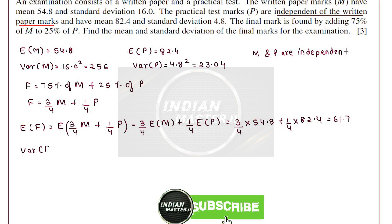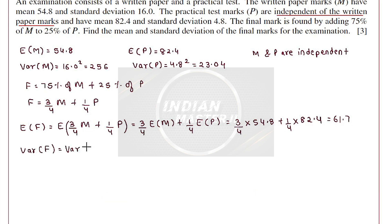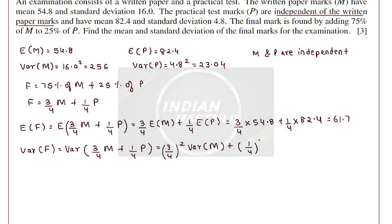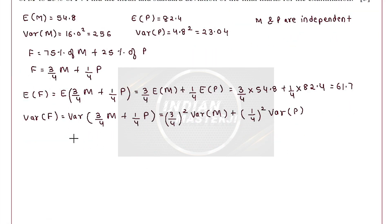Now to find the variance of the final mark, since M and P are independent the variances are added. So Var(F) = (3/4)² × Var(M) + (1/4)² × Var(P) = (9/16) × 256 + (1/16) × 23.04 = 144 + 1.44 = 145.44.